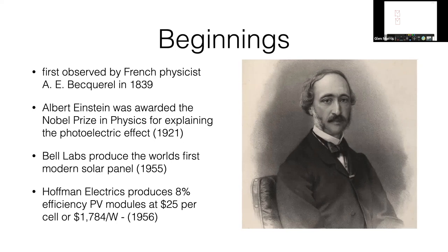Albert Einstein, you might be surprised to learn, was actually awarded the Nobel Prize in Physics for describing the photovoltaic effect — not for E=MC², which is what he's most famous for. It was actually describing the physics behind the photovoltaic effect, and it's quite tricky physics.